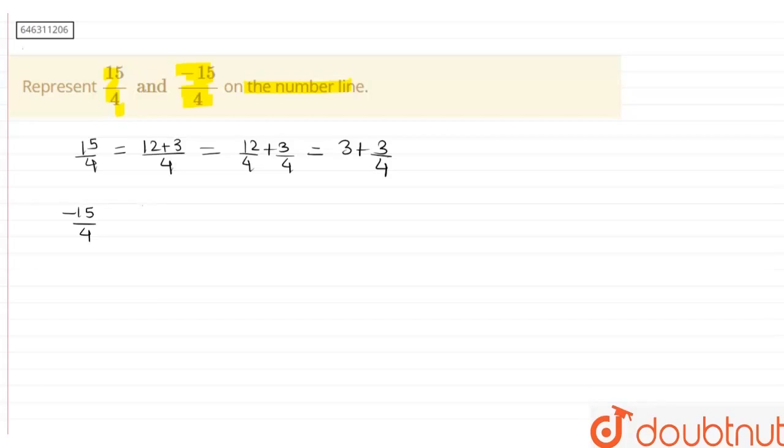-15/4 can also be written as (-12 - 3)/4, which can be written as -12/4 - 3/4, which can be written as -3 - 3/4.